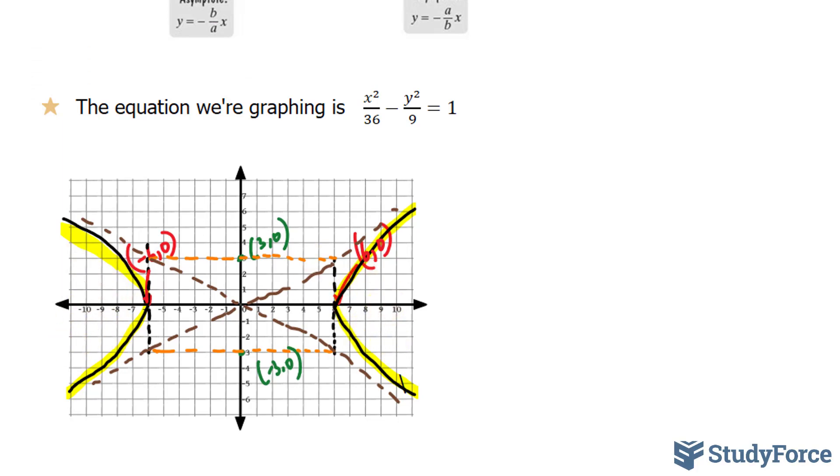To find the focus, we have to use the following formula. Where c represents, in our case, the x coordinate of the focus. And that's related to the formula a² plus b². And yes, that's the Pythagorean theorem.